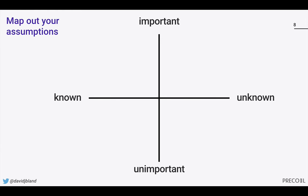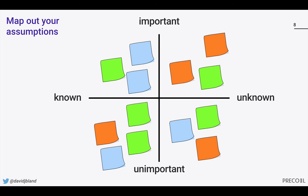While this may look intimidating, it comes together pretty quickly. A team member will take one of the desirability assumptions and ask, how much do we know about this and how important is it? As the next sticky goes up, you're asking: is this more important or less important than that one, and do we know more or less about it? It's not so much about exactly where it ends up — it's much more about the conversation. Teams start adding these up, and there are fascinating debates about importance and known versus unknown. Because you have this through the lens of at least three different people, you get a really rich perspective, and after healthy debate you end up with an interesting map of your assumptions.